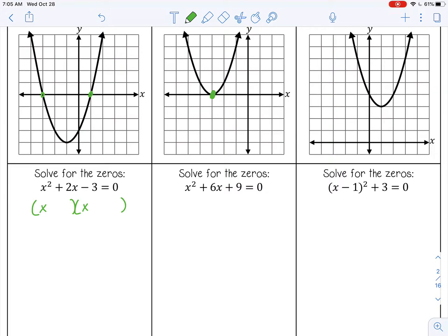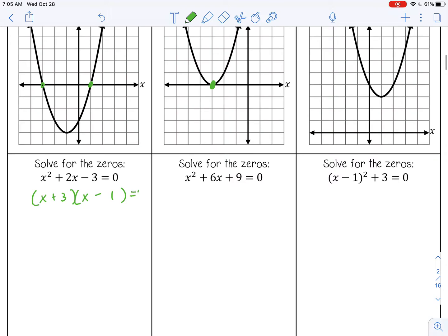Factors of 3 are 3 and 1, so it's got to be 3 and 1. And we want a positive 2, so that means it's got to be positive 3 and negative 1. Then we can set both of those equal to 0. So that's going to be x equals negative 3 and x equals 1. And you see those here, negative 3 and 1.